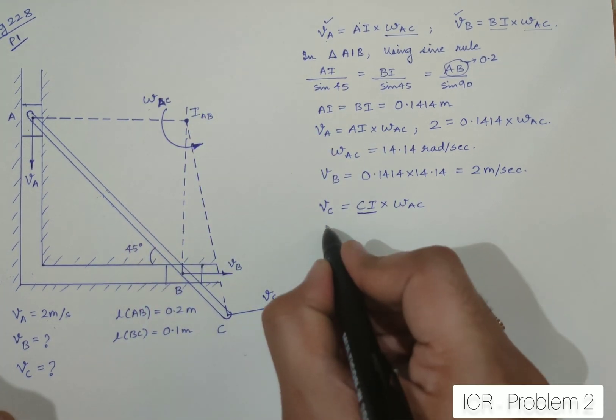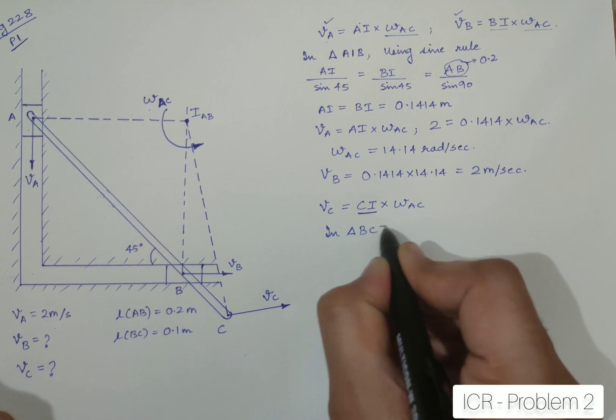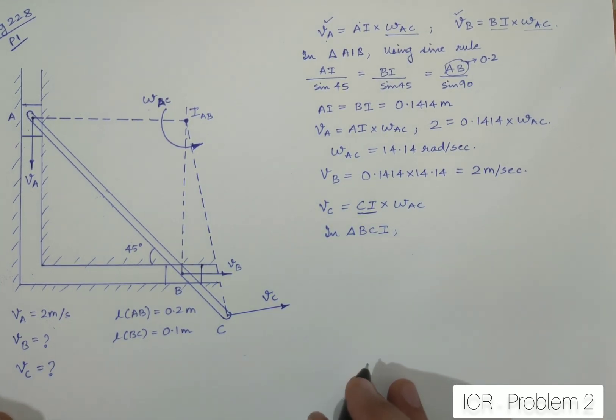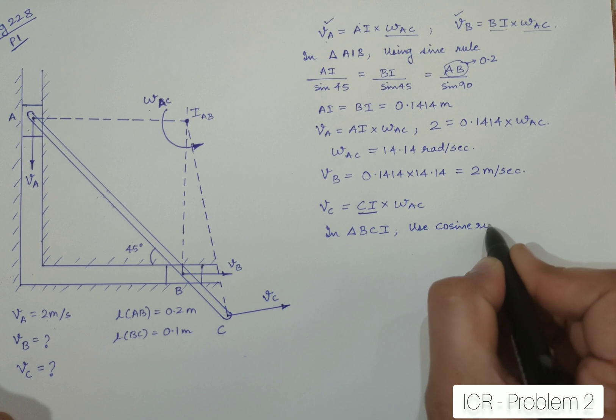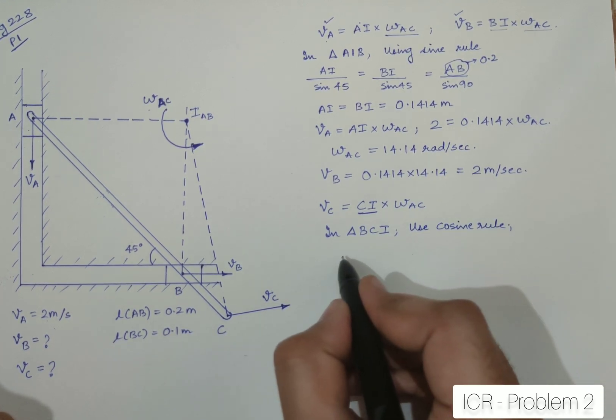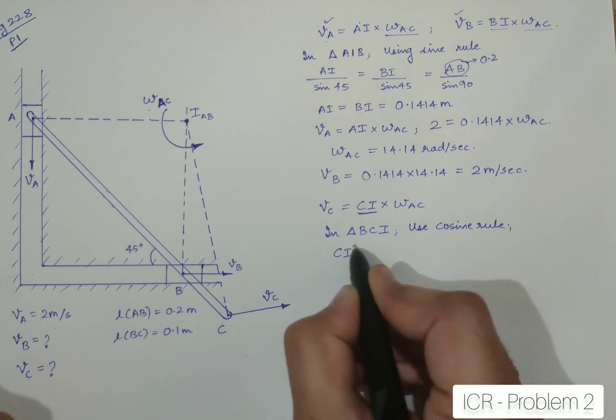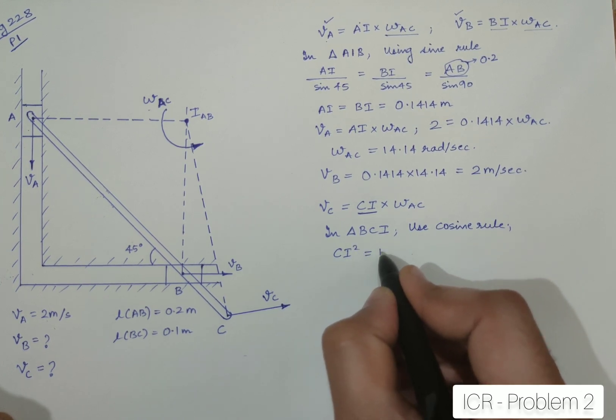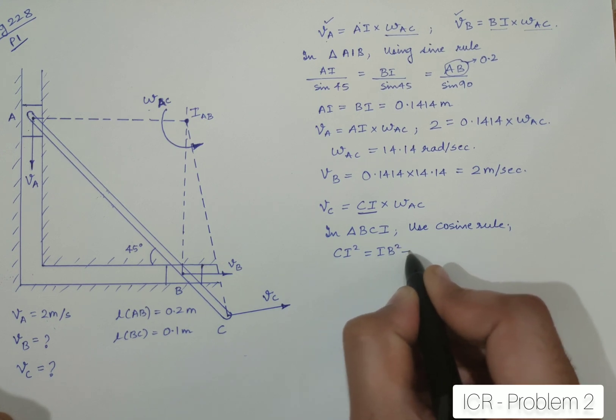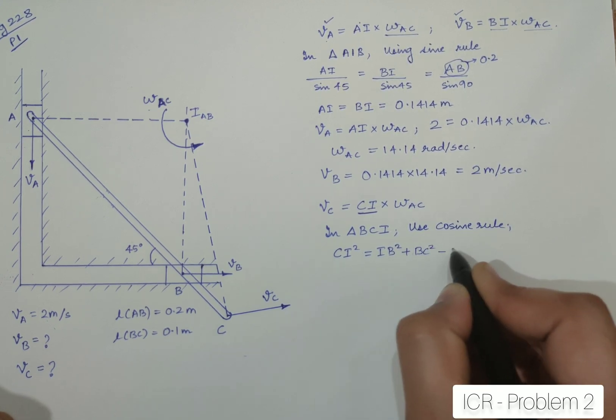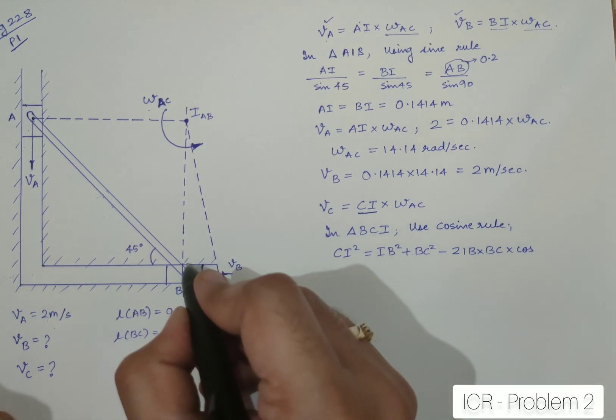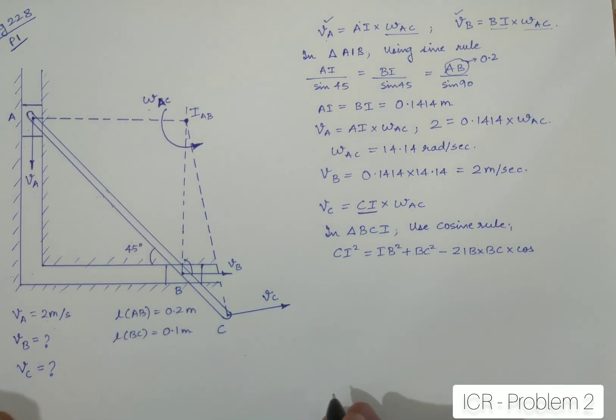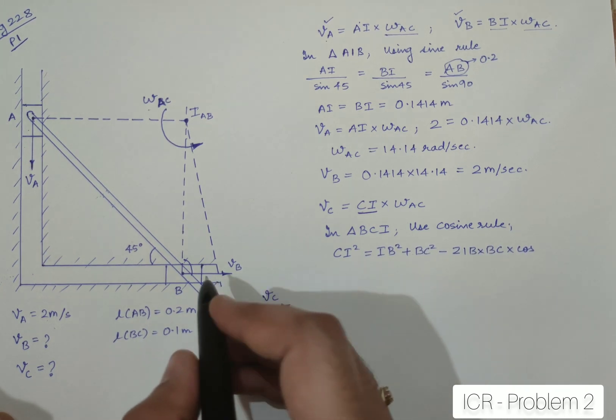In triangle BCI, if I use cosine rule, I can say that CI square will be equal to IB square plus BC square minus 2 IB into BC cos of this angle. What is this angle over here? We need to find out this angle. This is a very important angle for us. Yes, this angle can be found out. This total is 90.